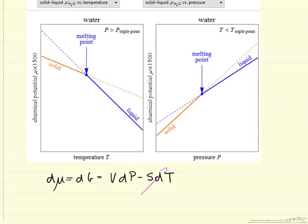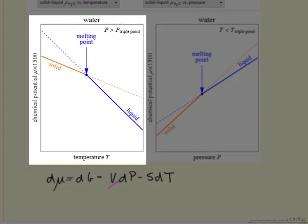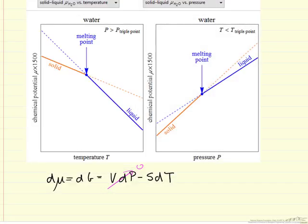With the same type of reasoning, if instead we look at constant pressure, so plot on the left, this term then goes to zero. Chemical potential decreases since the entropy is positive, and entropy is bigger for the liquid than the solid, so we see a larger decrease in chemical potential.